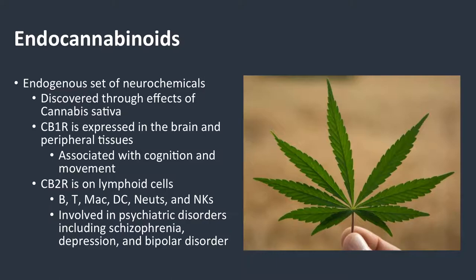Let's talk about endocannabinoids. Depending on when you went to medical school, you learned about endocannabinoids or you did not. They are an endogenous set of neurochemicals — we discovered them when we started studying marijuana. You have two endocannabinoid receptors: CBR1 and CBR2. CBR1 is everywhere; if you look at a brain scan of CBR1, it is all over the brain.